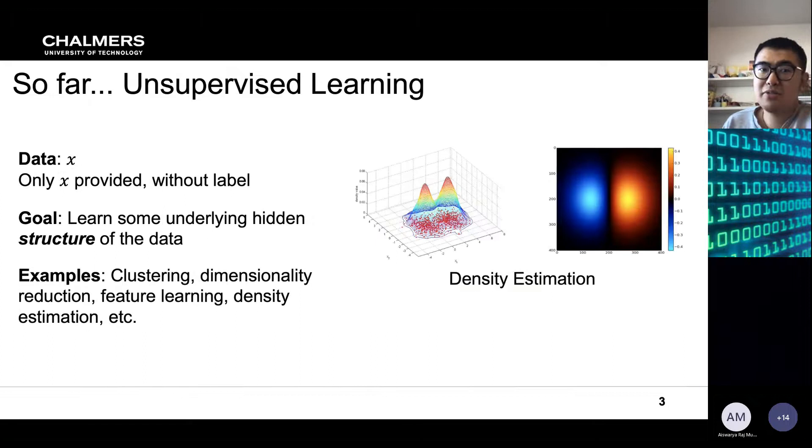And the second category is unsupervised learning. In this kind of method we will only need the single data, the data x, and only x is provided. We don't need any label and the goal of this method is basically learn some underlying hidden structure of the data. So we have examples like clustering, dimensionality reduction, feature learning and density estimation, etc.